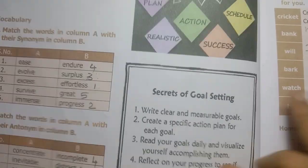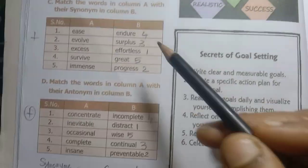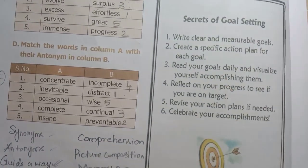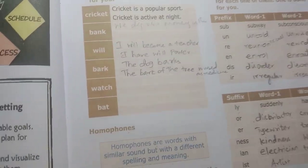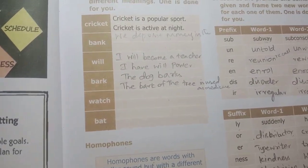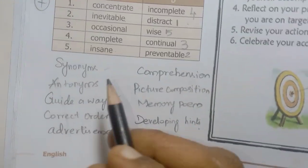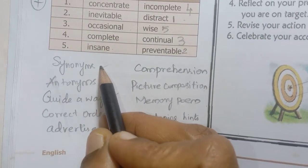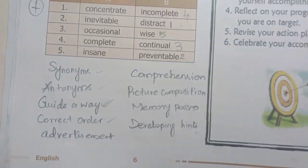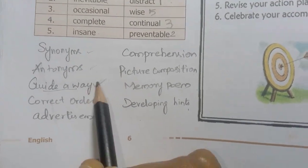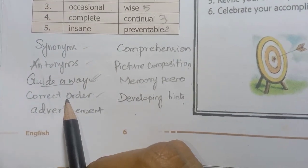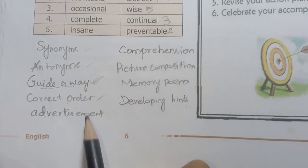Page number 6. Let's look at synonyms and antonyms — all synonyms are compulsory. Antonyms, guide away. That is road map. Correct order. Next is advertisement, comprehension, picture composition, and memory poem — it is compulsory, you have to practice.